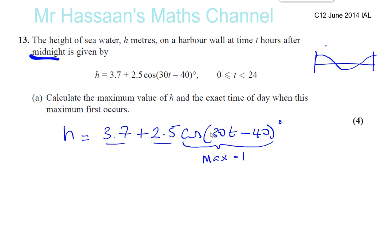The maximum value is equal to 1 of this. So the maximum value of h is therefore going to be 3.7 plus 2.5 times 1, which is going to be 5 plus 1.2, which is 6.2. 6.2 meters. So that's the answer to the first part, the maximum value of h.